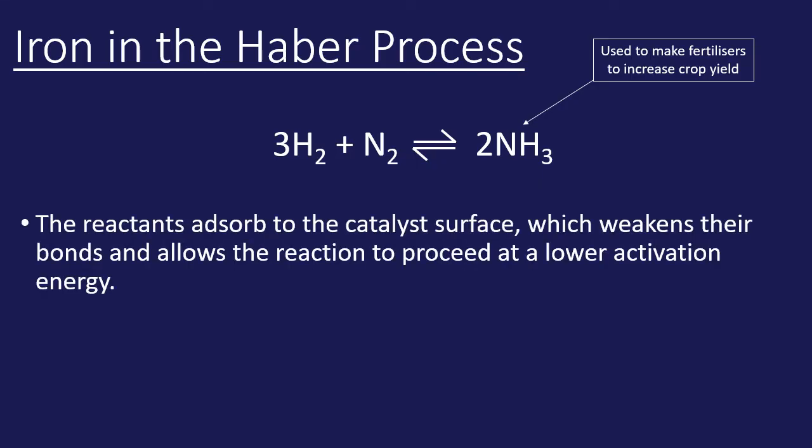In this case, the iron doesn't actually get involved directly in the reaction, but the iron offers a surface for the hydrogen and nitrogen to adsorb or bind to. When they bind to the iron, the bonds weaken. When the bonds weaken in the reactants, it allows the chemical reaction to take place much more easily and therefore lowers the activation energy.